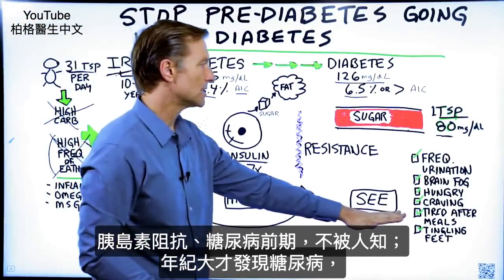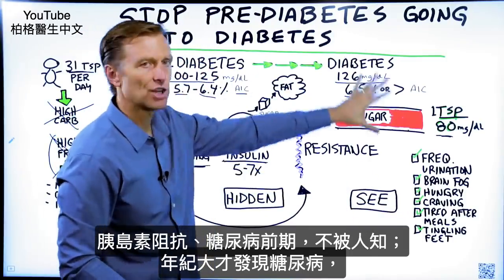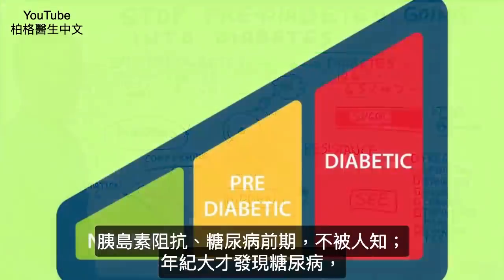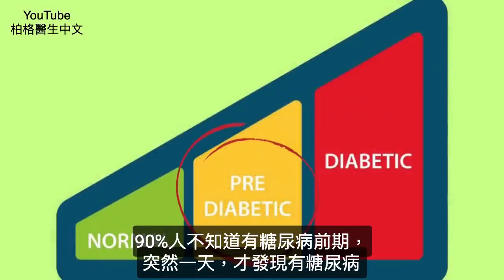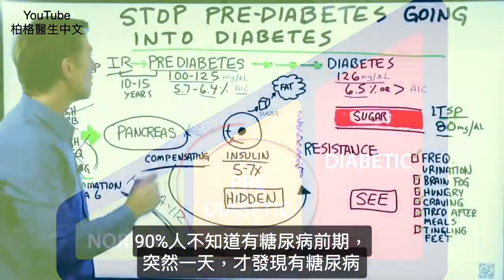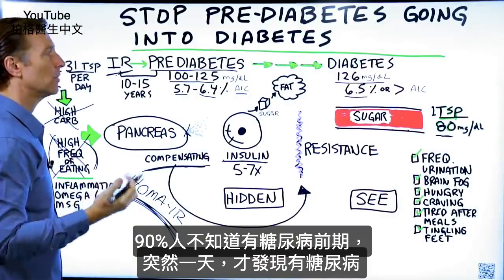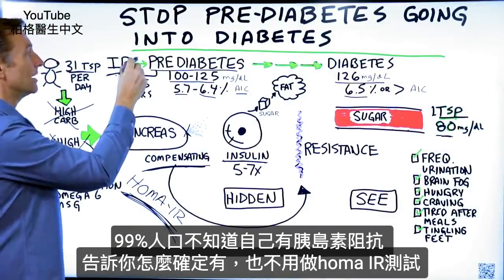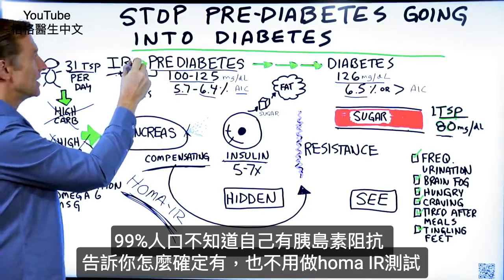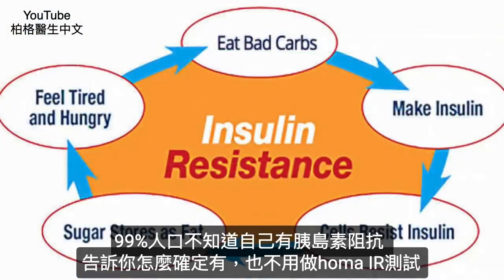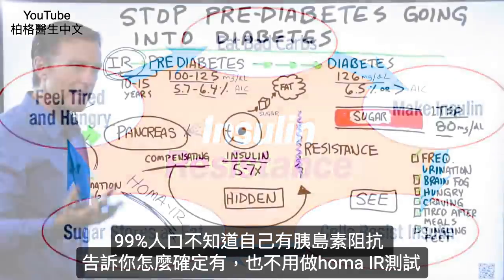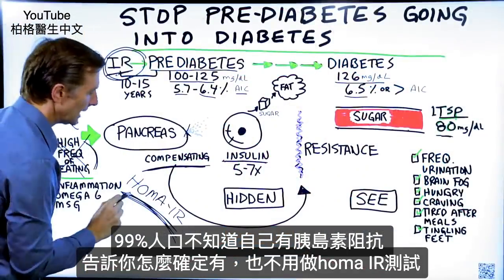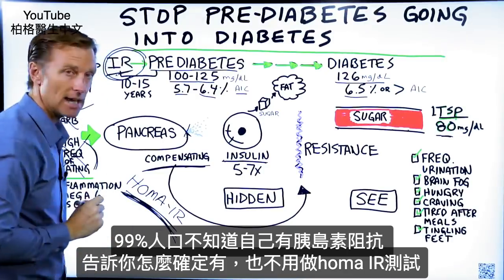So this area — insulin resistance — is kind of hidden. The diabetes diagnosis is what you see, and that happens later in life, while insulin resistance happens way before. 90% of people that are pre-diabetics don't even know they're pre-diabetics — they just wake up one day and they're diabetic. I would say probably 99% of people don't know they have insulin resistance. I'm going to tell you the symptoms to determine if you have insulin resistance, even without taking this test.